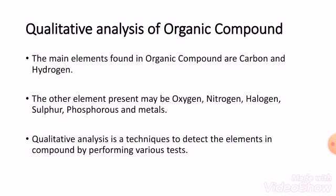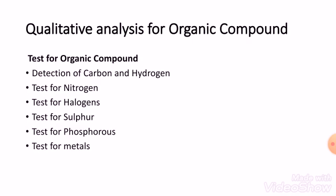Qualitative analysis is a technique to detect the elements in a compound by performing various tests. Let's see which tests we can perform for finding out the elements in organic compounds. The first test is detection of carbon and hydrogen. The second test is the test for nitrogen, which is performed to identify the presence of nitrogen in the given compound.